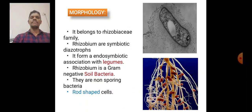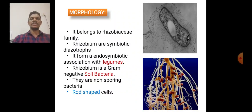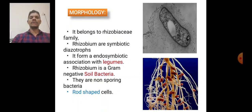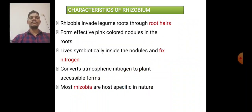The morphology of Rhizobium: it belongs to the Rhizobiaceae family. Rhizobiums are symbiotic diazotrophs and form endosymbiotic associations with legumes. Rhizobium is a gram-negative soil bacteria. These are non-spore-forming, rod-shaped cells.